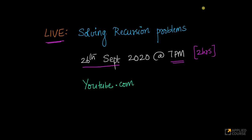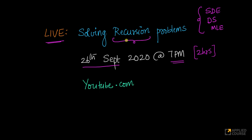For a wide variety of roles — whether it is software development engineer roles, data scientist roles, or machine learning engineer roles — for a wide spectrum of roles at many product-based companies, you would encounter programming rounds. In these programming rounds, a very popular type of question involves recursion. We wanted to tackle a bunch of recursion problems which are very popular in many product-based companies for all these types of roles, with a focus on how to solve them.